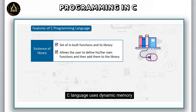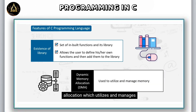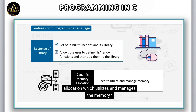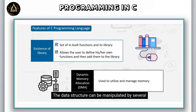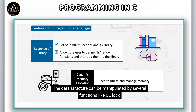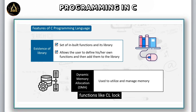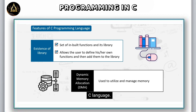C language uses dynamic memory allocation which utilizes and manages the memory. The data structure can be manipulated by several functions like calloc, malloc, realloc, and free functions of C language.